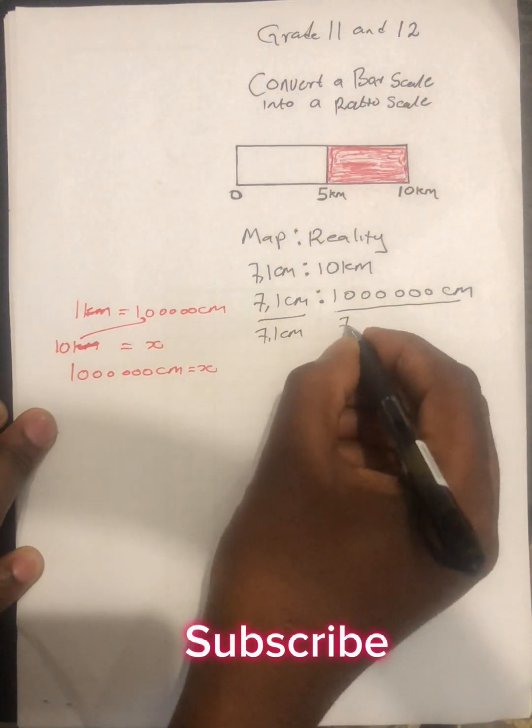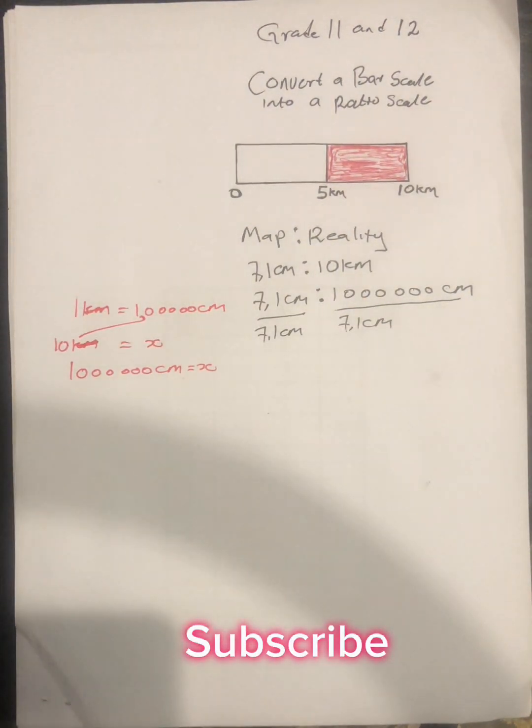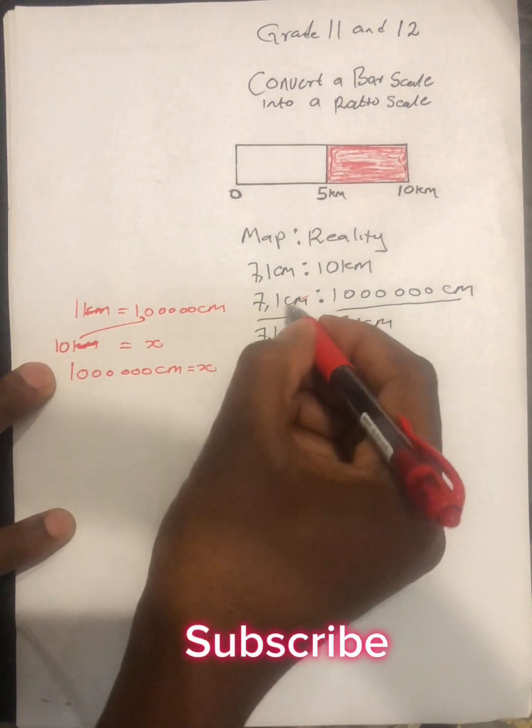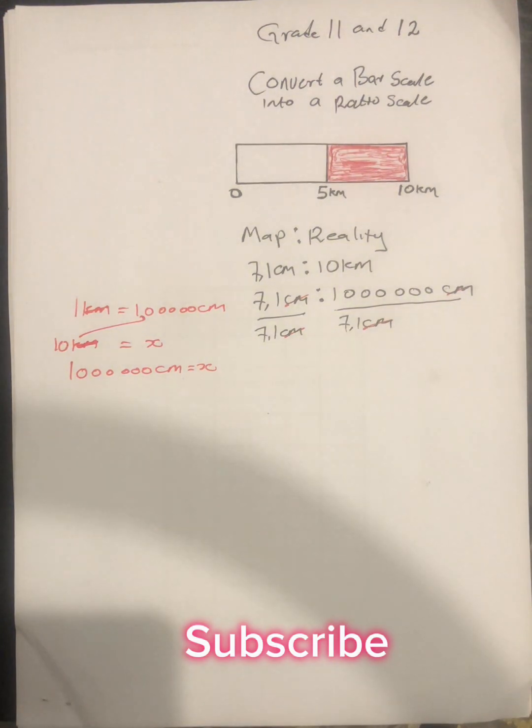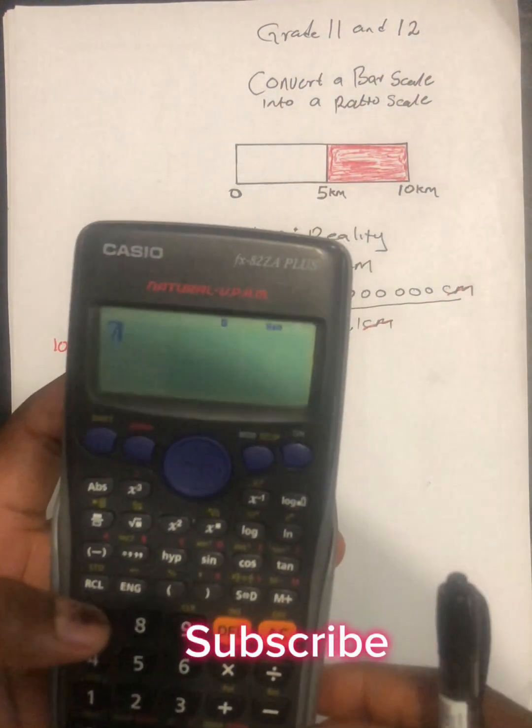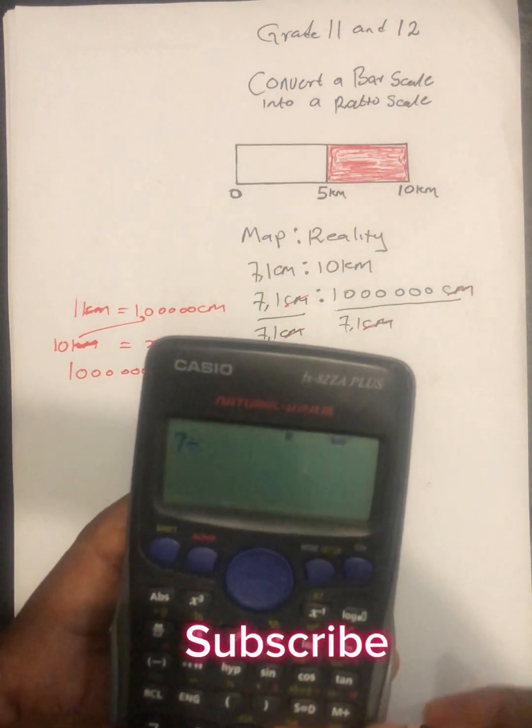We're just going to divide everything by 7.1 centimeters. We also divide this side by 7.1 centimeters. The units, they will cancel each other. Then you remain with numbers.